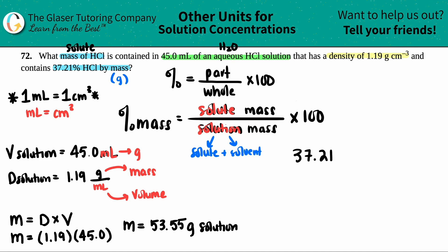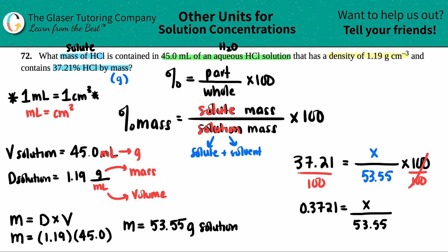37.21 equals this times 100. The 53.55 is going on the bottom. And the x is going on the top. So I'm going to get rid of the 100. I'm going to divide by 100 because it was being multiplied. So that gets rid of that. This now turns into 0.3721 equals x over 53.55. And now all we have to do is just multiply them out. So 53.55 times 0.3721. Now I'm going to round to three sig figs because the lowest number has three sig figs. So it's 19.9. And now this is the grams of the solute, which was the HCl. And there you go.